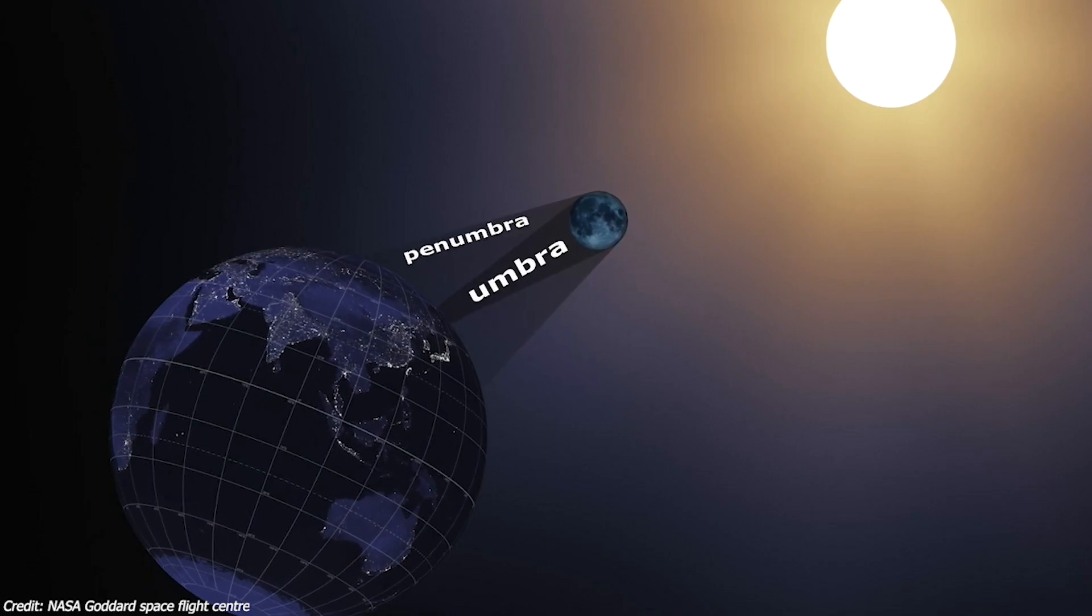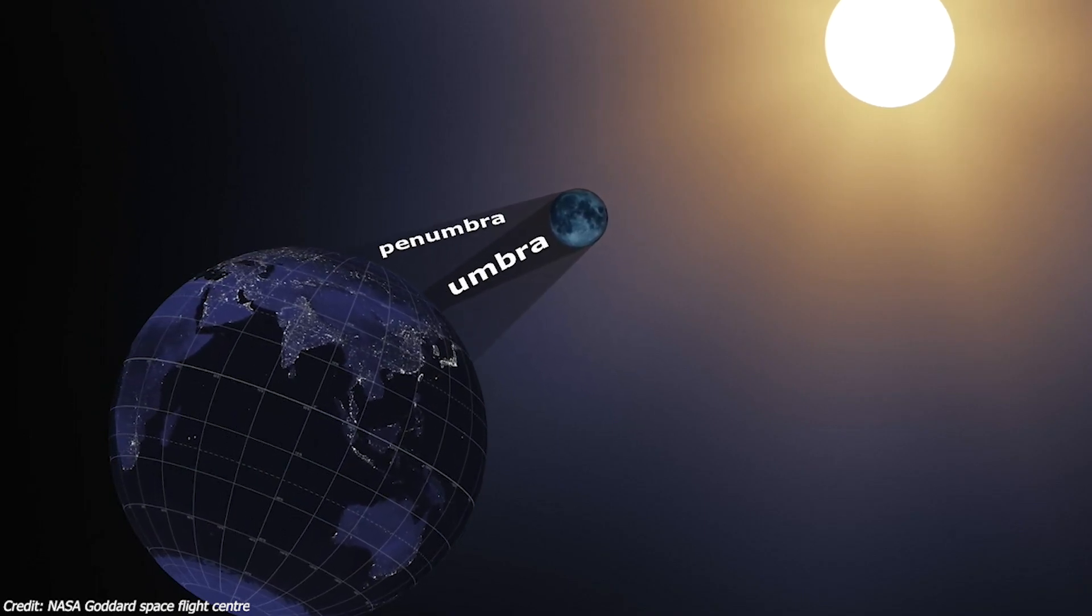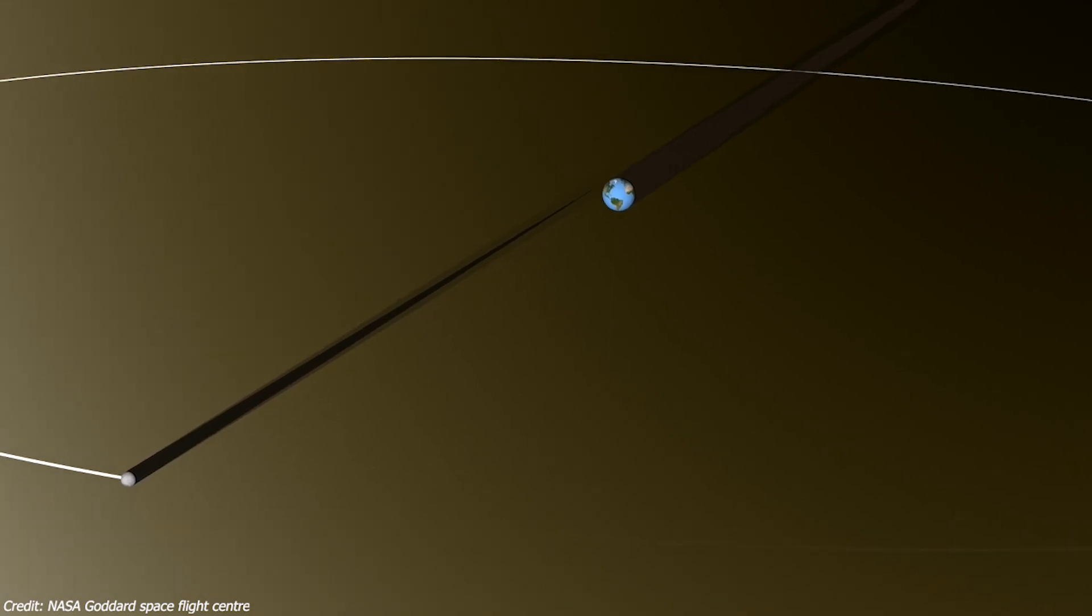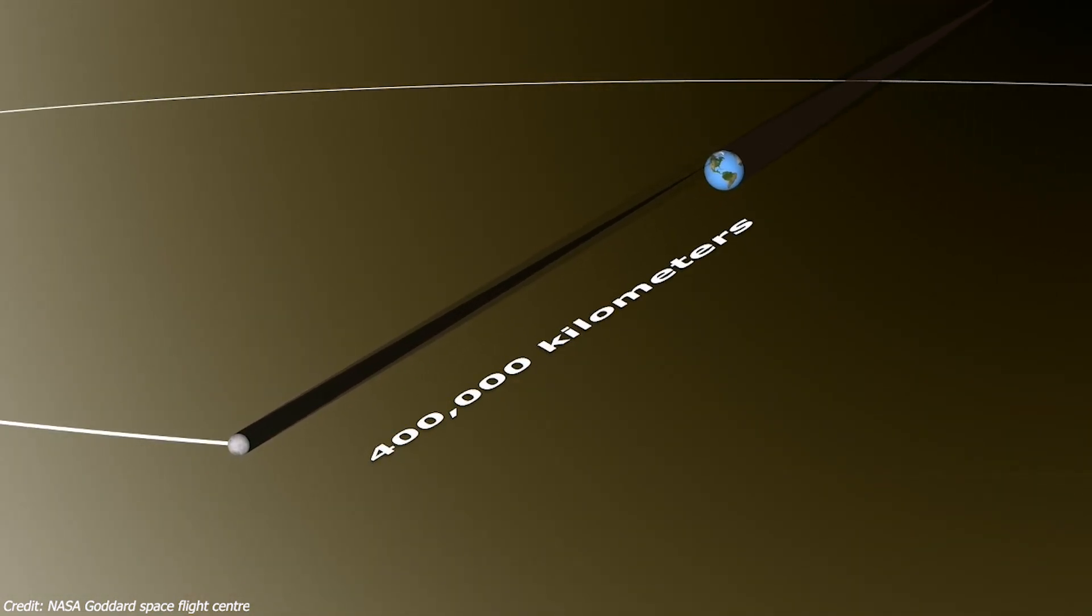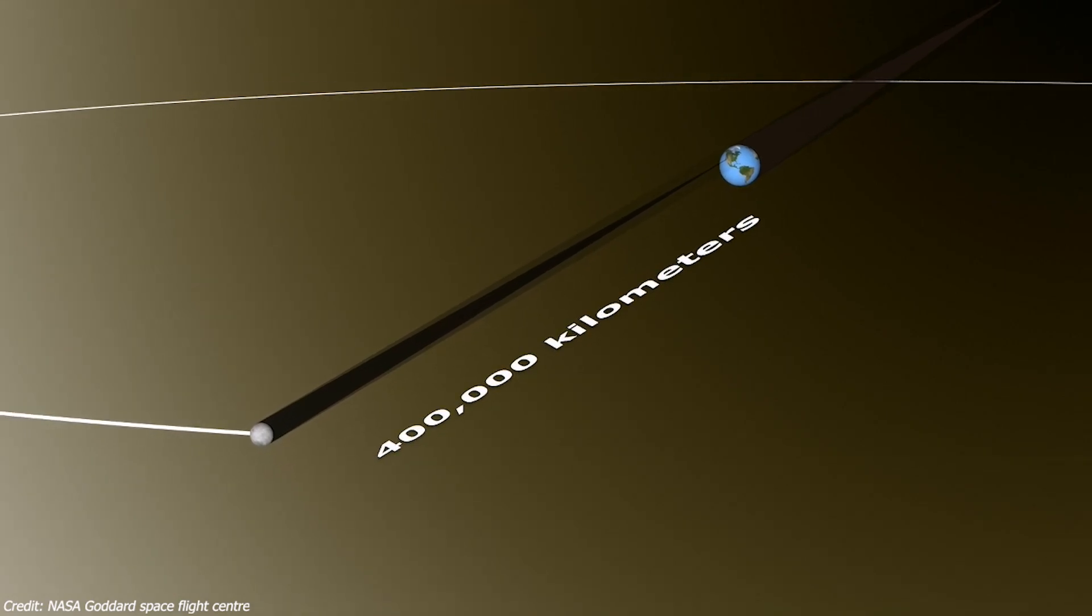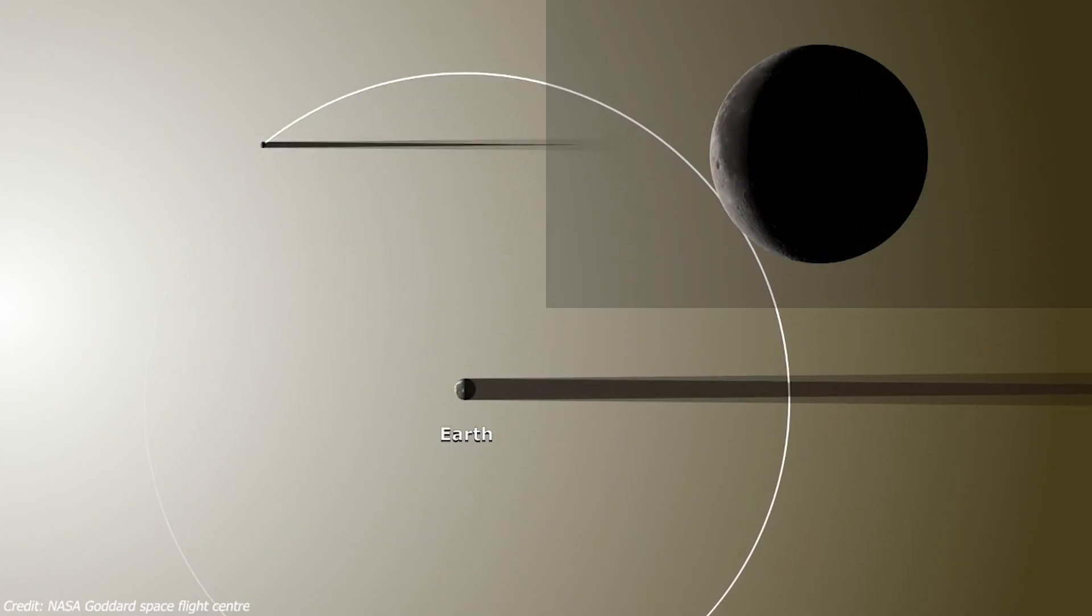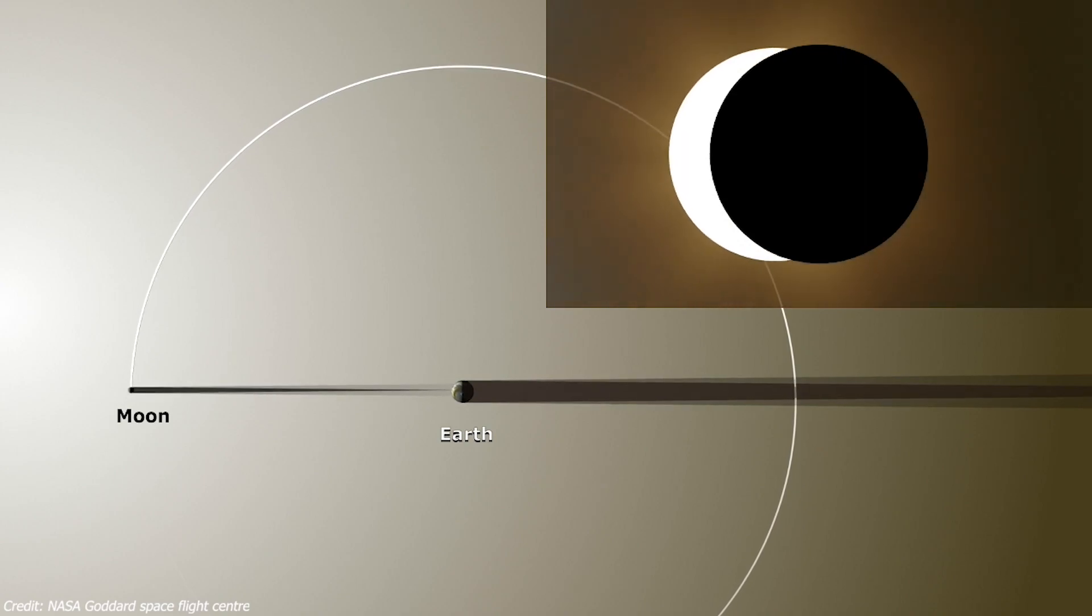The moon's umbra is the part of the moon's shadow where the entire sun is blocked by the moon. In space, it's a cone extending about 400,000 km behind the moon. When the small end of this cone hits the Earth, the places inside that region will experience a total solar eclipse.